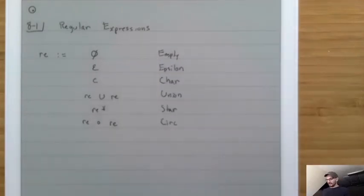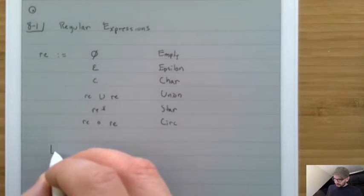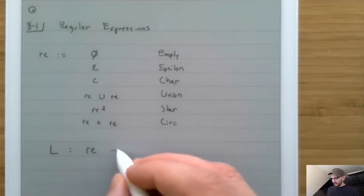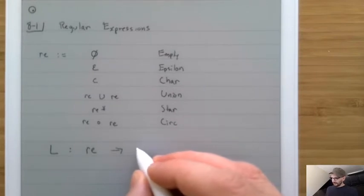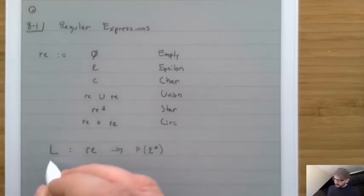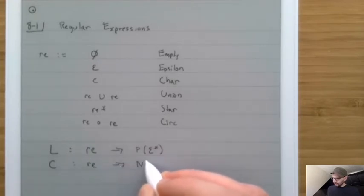Something interesting is that each one of these six possibilities has a convenient way to describe what set of languages it is, and a convenient way of turning it into an NFA. We'll define a function called L that takes a regular expression and turns it into the actual element of the power set of sigma-star — the actual language. Then we'll write another function called C for compile that takes a regular expression and turns it into an NFA.